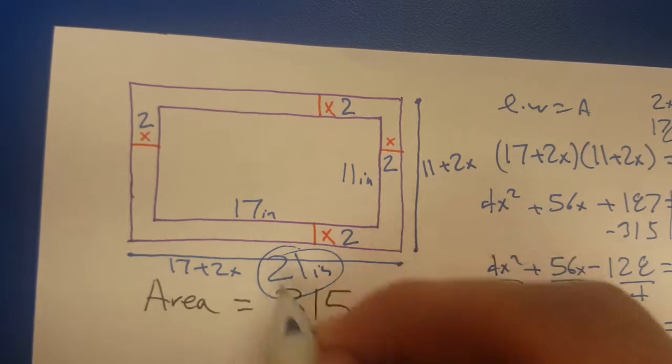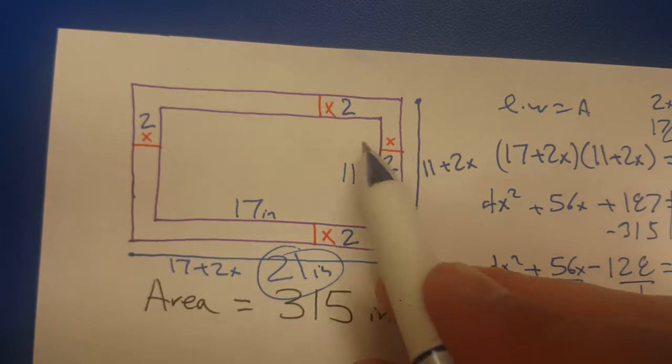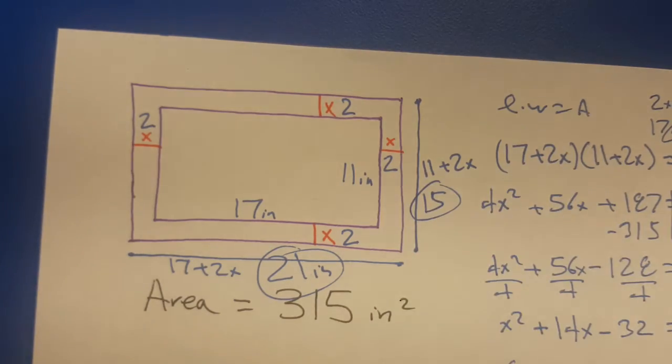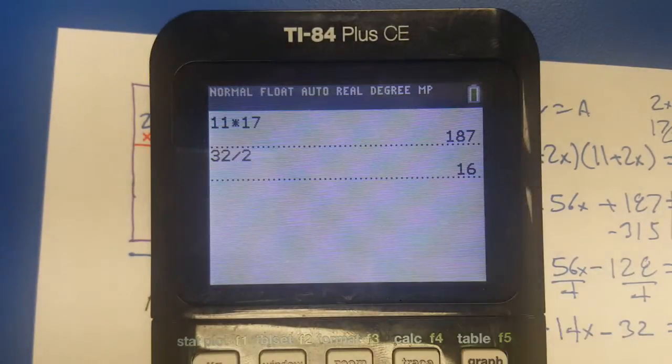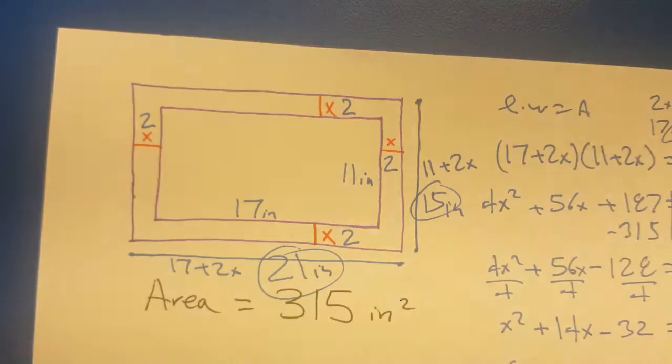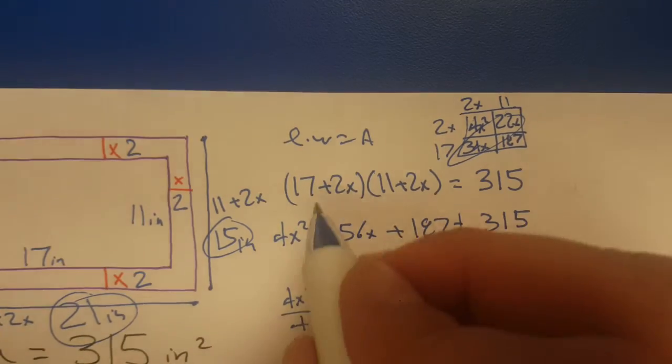And then 11 plus 2 plus 2 is going to be 15, so it's actually going to be 15 inches tall. Let's double check, 21 times 15. So that is the super duper crazy long method.